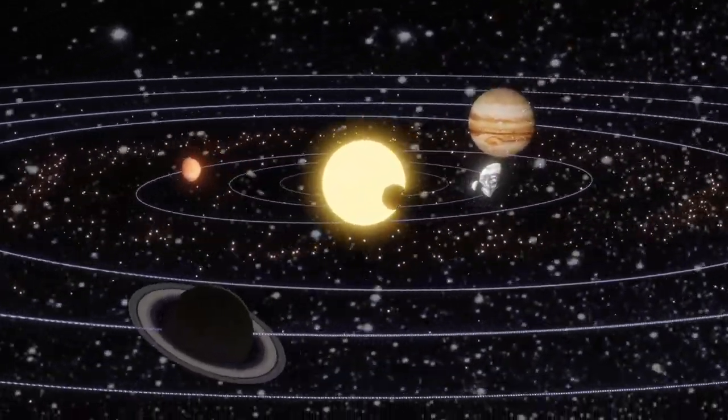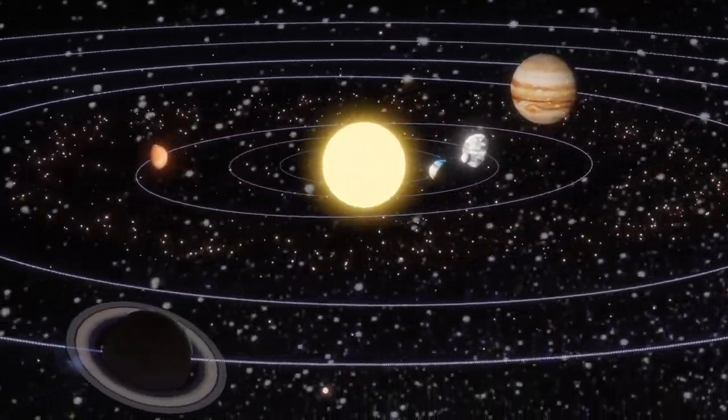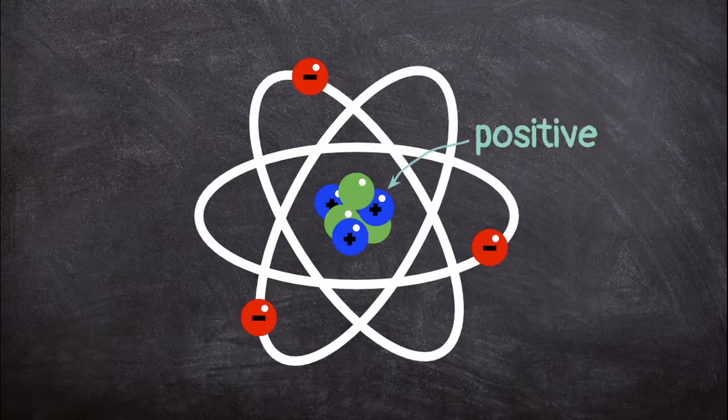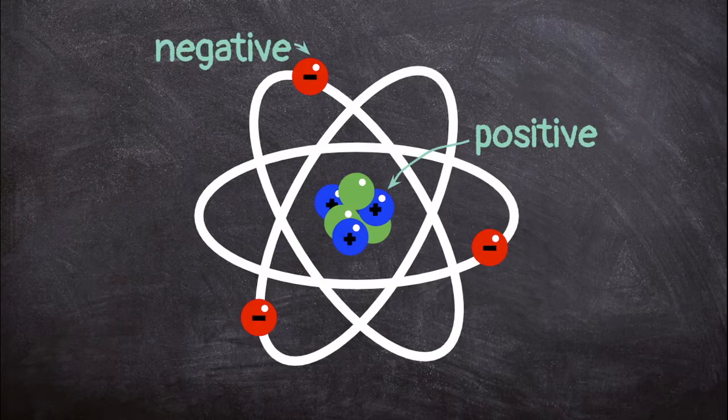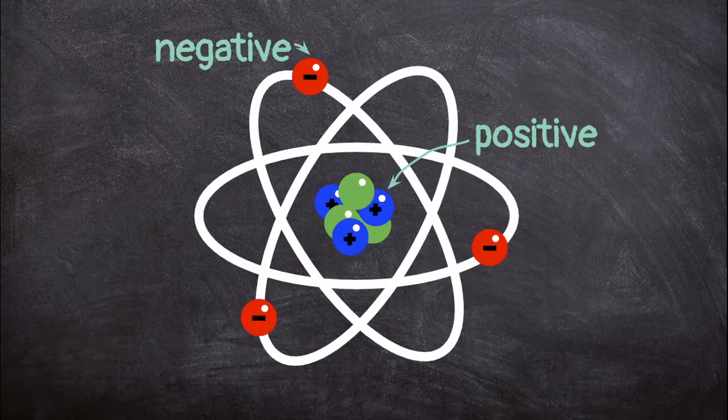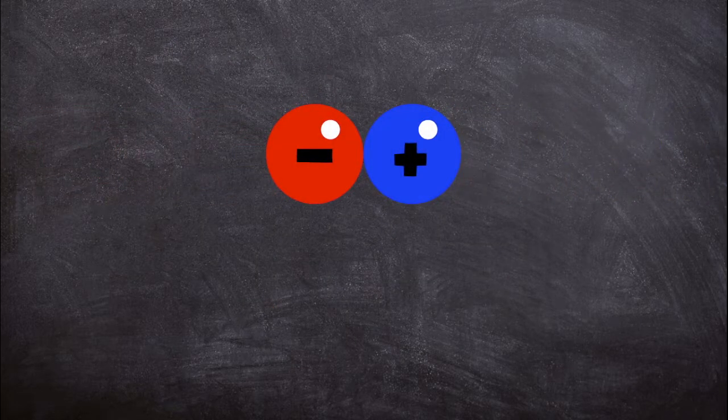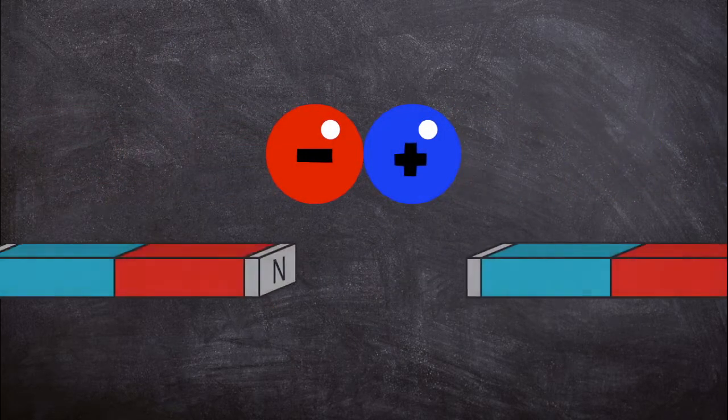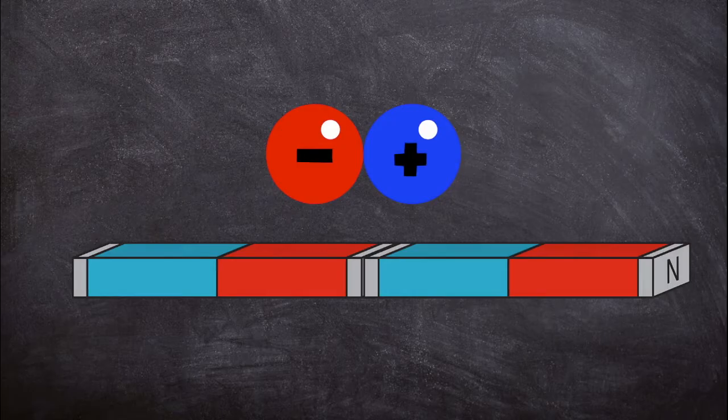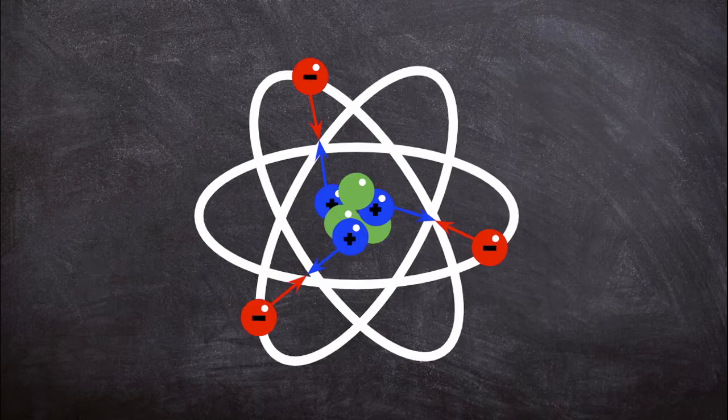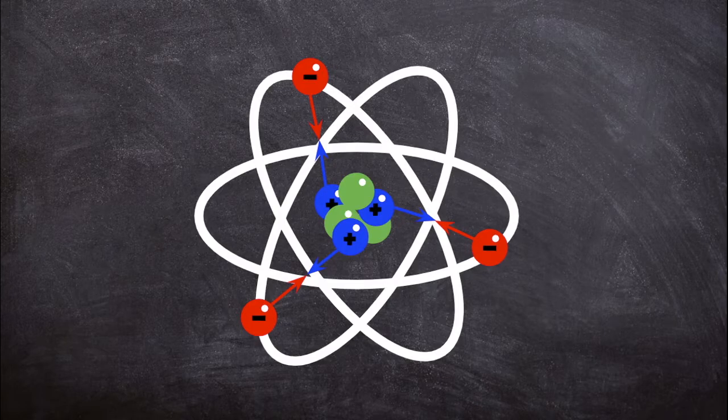Protons carry a positive charge, and electrons carry a negative charge. Neutrons are neutral, which means they don't have a charge at all. Protons and electrons are attracted to one another, just like the positive end of one magnet attracts the negative end of another. The positive protons in the nucleus are what keep the negative electrons floating around like that.